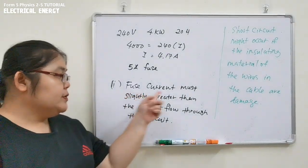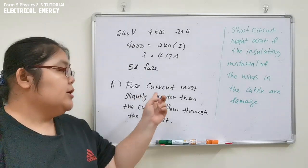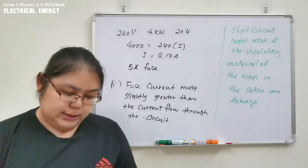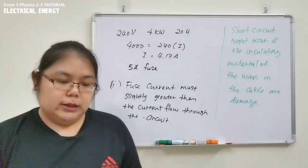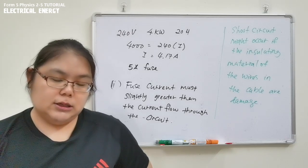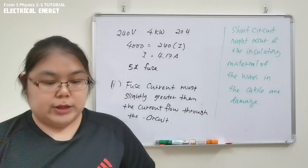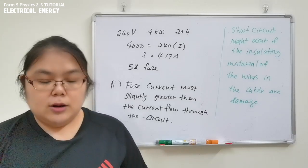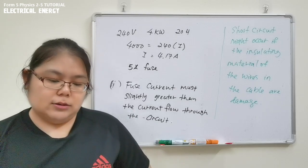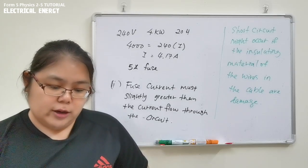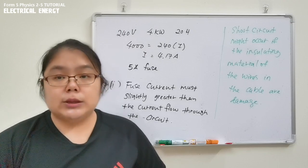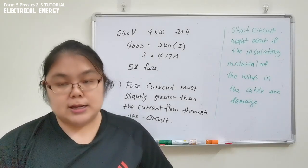The fuse current must be slightly greater than the current flowing through the circuit. For part (c), we calculate the electrical energy consumption. The table shows cost rates: first 100 units at 20 cents, next 100 units at 23 cents, and over 200 units at 25 cents per unit.